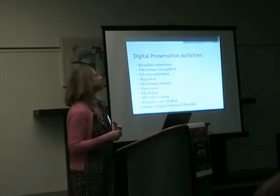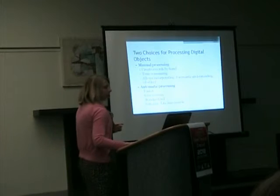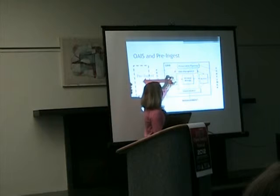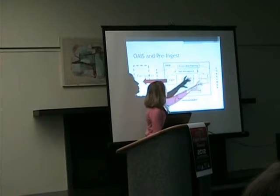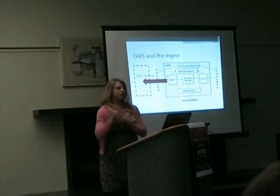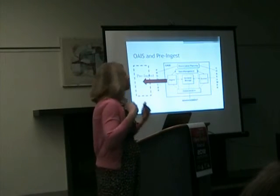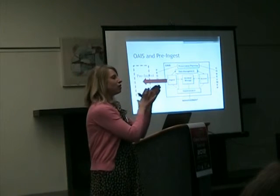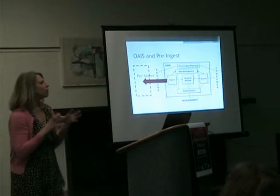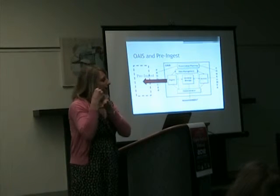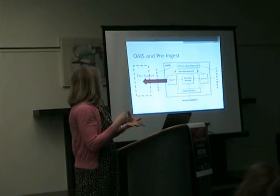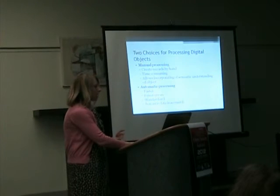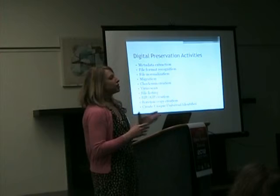You're also interested in automatic file listings. That open archival information system talks about the ingest section — you bring material into the electronic system, you keep it, and then you share it. There are little information packages that interact with each one of those activities: the submission information package, which is what happens when it first gets into the system; the archival information package, which is how it's stored; and the dissemination information package, which is how you share the digital object. Those packages mean that what you're preserving isn't just the digital object itself, but all the metadata around it — descriptive metadata, rules about who can see it, and how this document is the normalized version of the original. All of that is kept together in a package, and that SIP or AIP creation is part of your digital preservation activity.